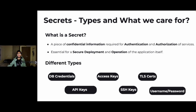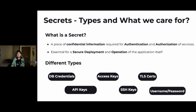What are the different types of secrets? These include database credentials, access keys of different cloud providers if your application is talking to a cloud provider, TLS certificates, API keys, SSH keys if you want to remotely access virtual machines and have a configuration file with SSH keys — you don't want those stored on Git. And then there are the normal username and password combinations. These are the main types of secrets associated with our application.